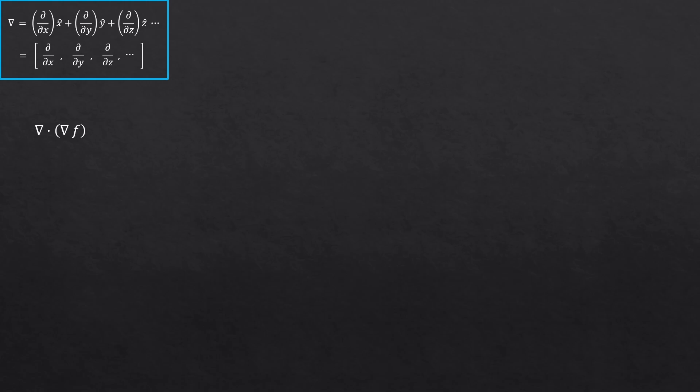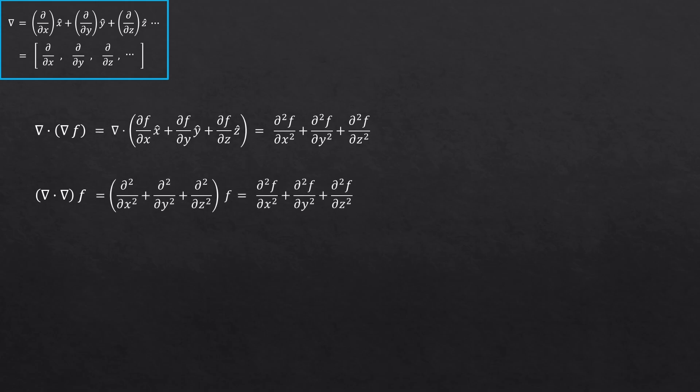Here, I wrote the del operator just for reference. The gradient of a scalar is this, as we all know by now. And the divergence of that should simply be this. So the divergence of the gradient of a scalar is essentially the second partial derivatives. And you know what? If you think about it, we could also write it this way. Because if you do the dot product of the two del operators, we also get the second partial derivative expression. So these two are equal. Do you agree?